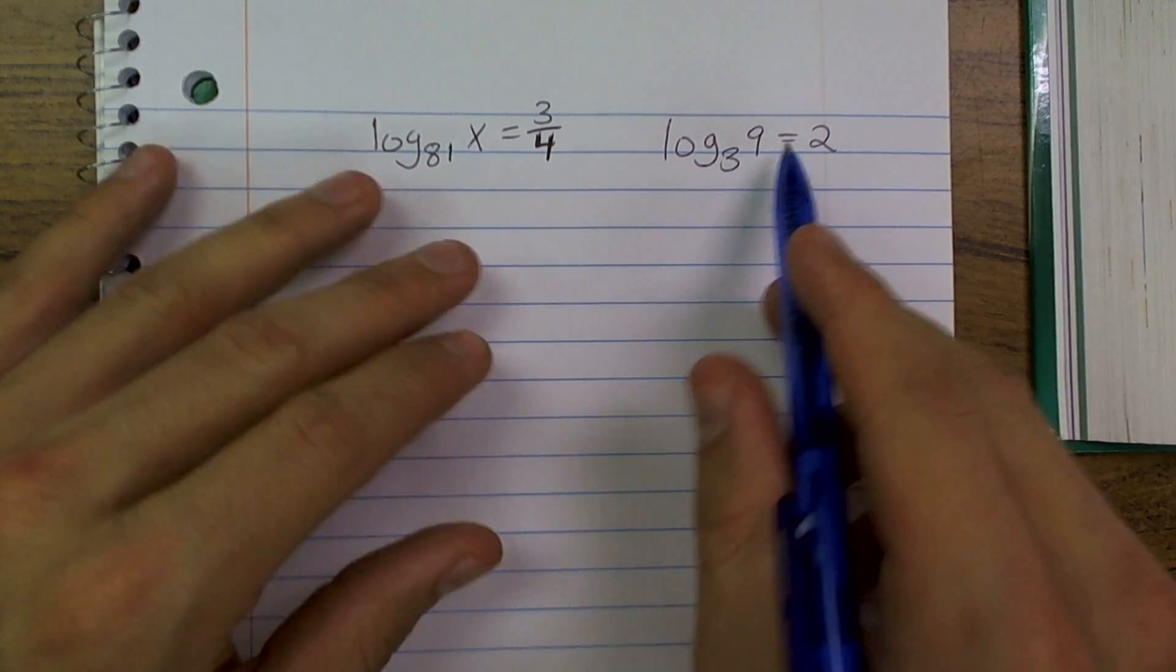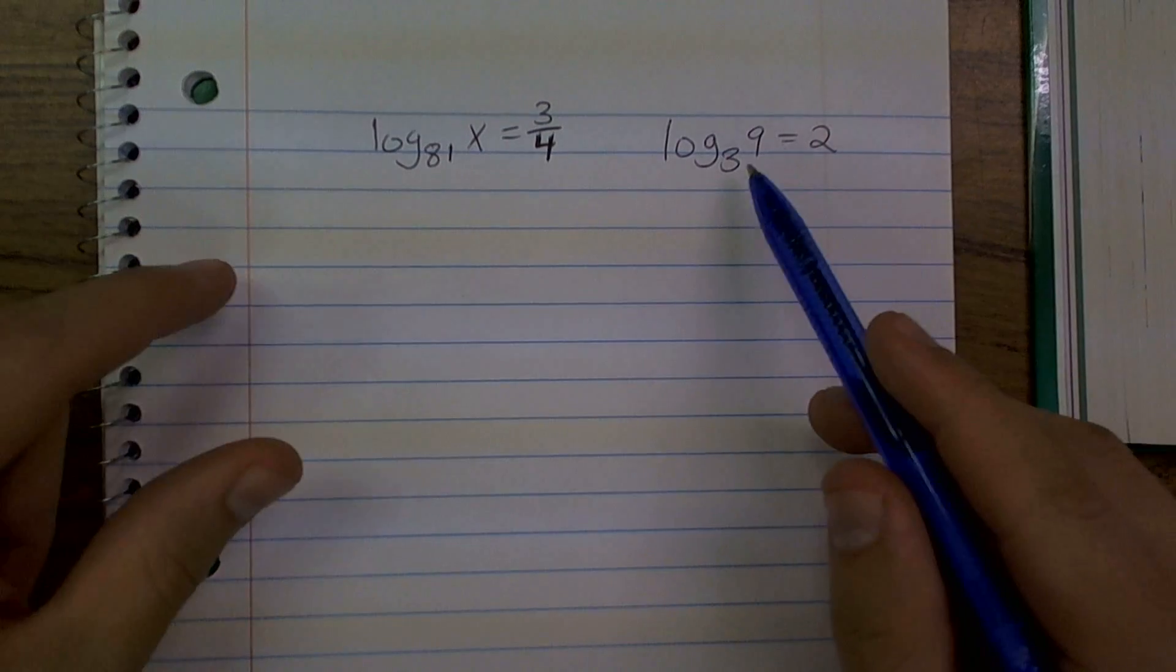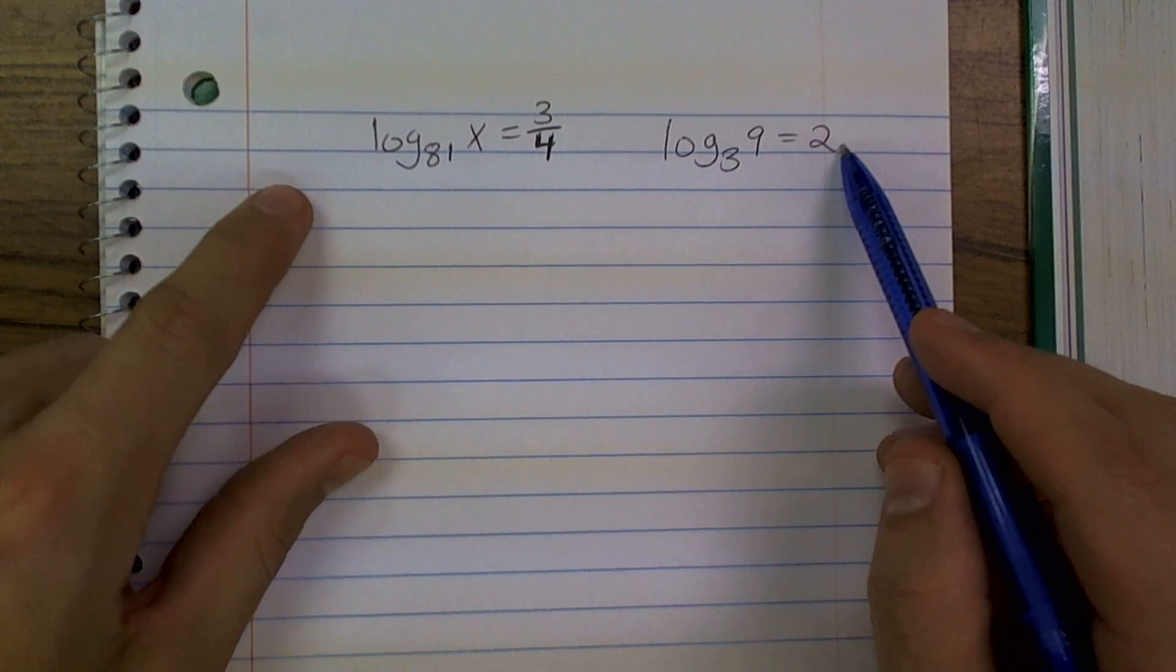That's one thing I can always remember because a lot of times I forget too. What does a logarithm represent? It represents 3 raised to what number equals 9. Well, that answer is 2.